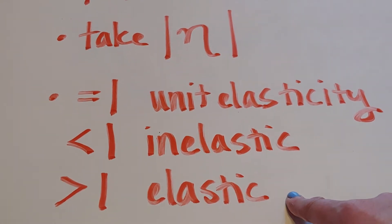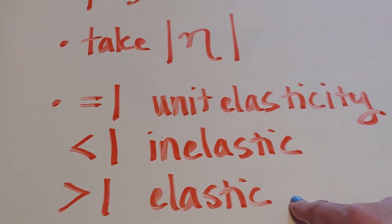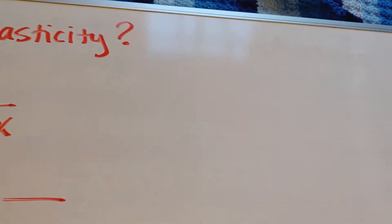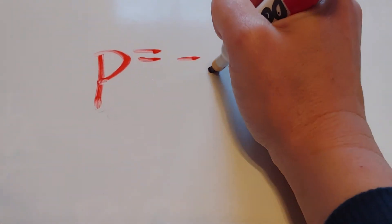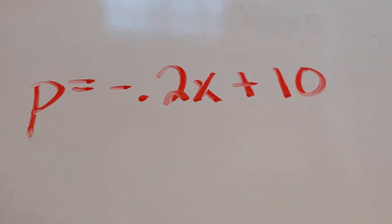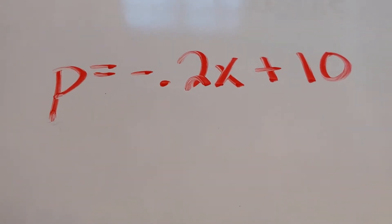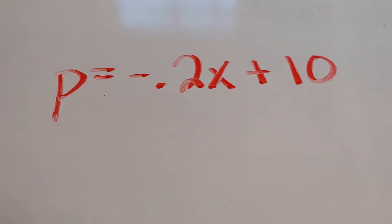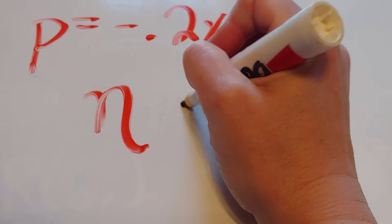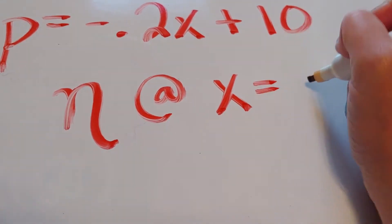So let's go ahead and do a problem, and I'm just going to make up a p and an x. So I'm going to have a demand function, and let's say that that demand function is negative 0.2x plus 10. And let's say that at the end of this, I want to find the elasticity when x is 20.